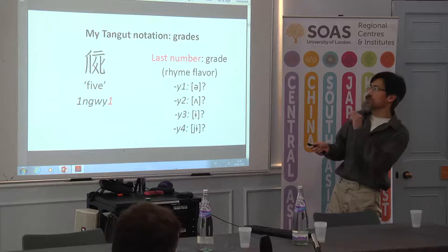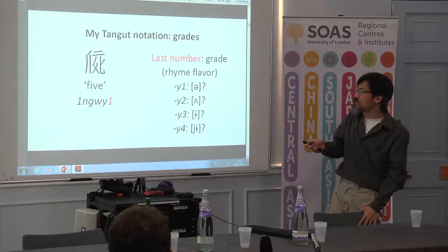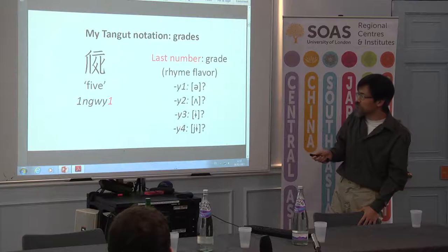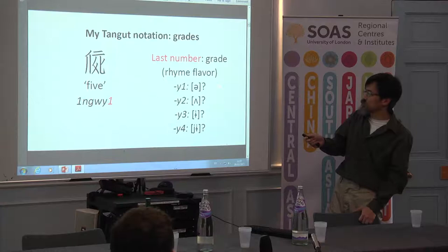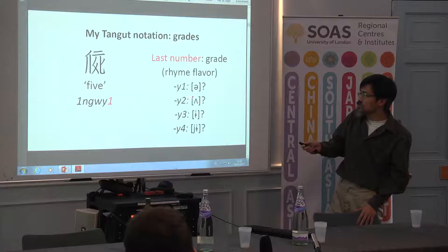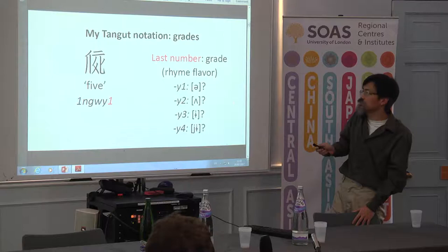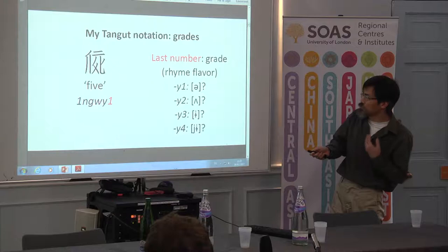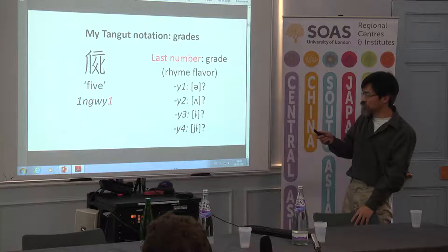Shun Gong just talked at great length about grade two, and in my system I have four grades rather than three. You can think of the grades as flavors of the rhymes — so a grade one, two, three, or four Y has some kind of common quality, but they sound slightly different, and exactly how they sound different is something I'm noncommittal about. I prefer to use abstract numerals rather than commit to saying that a rhyme is uvularized or whatever, although I am now strongly tempted to adopt Shun Gong's system.